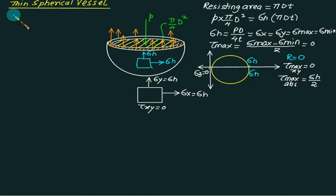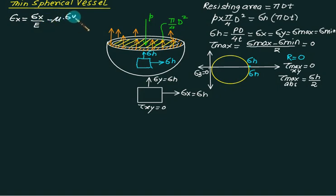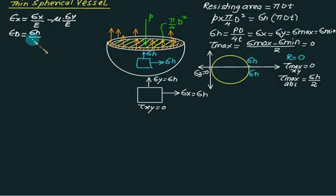Now we calculate ε_x. ε_x equals σ_x / E − μ × σ_y / E. Both are the same, and this equals ε_d, which has only one dimension. So ε_d = σ_h / E × (1 − μ), where σ_h = PD / 4T.